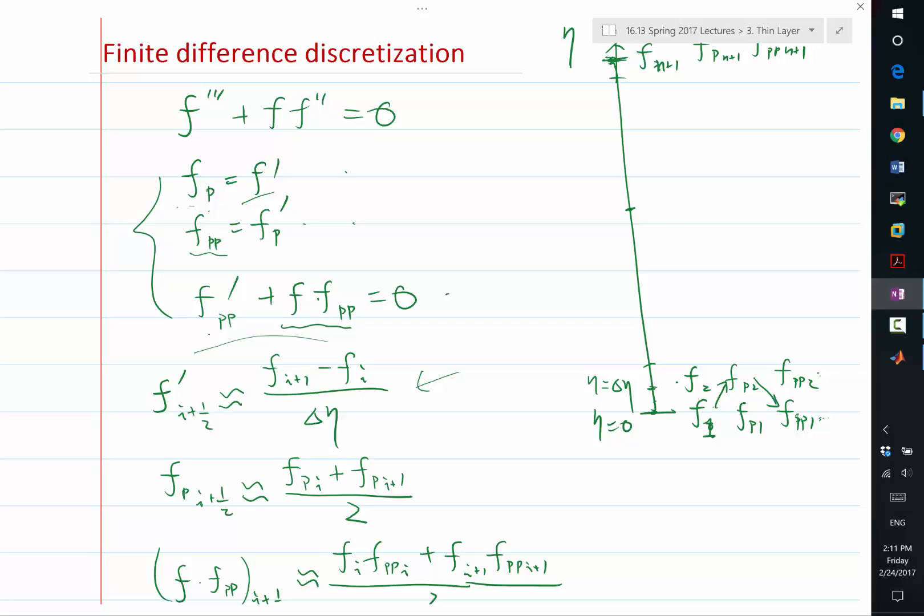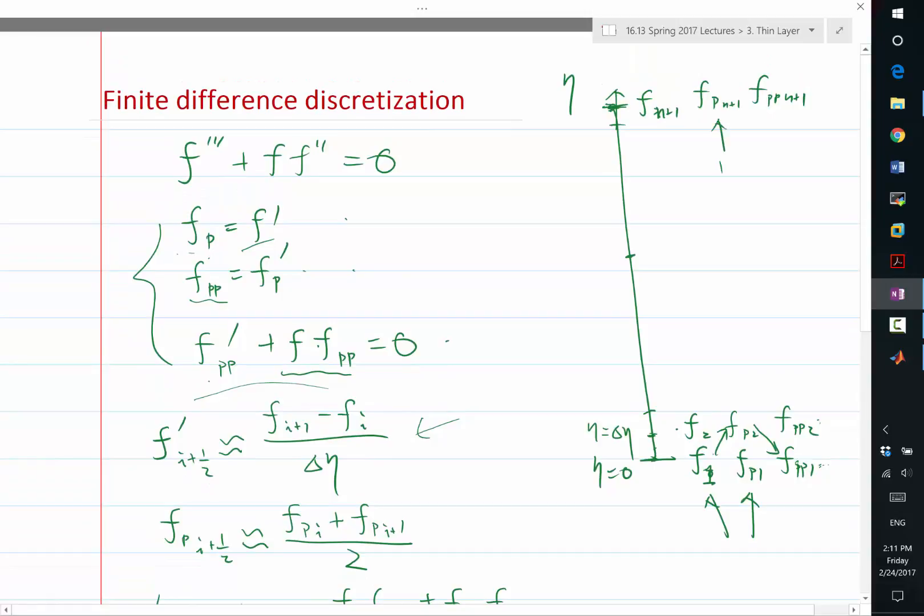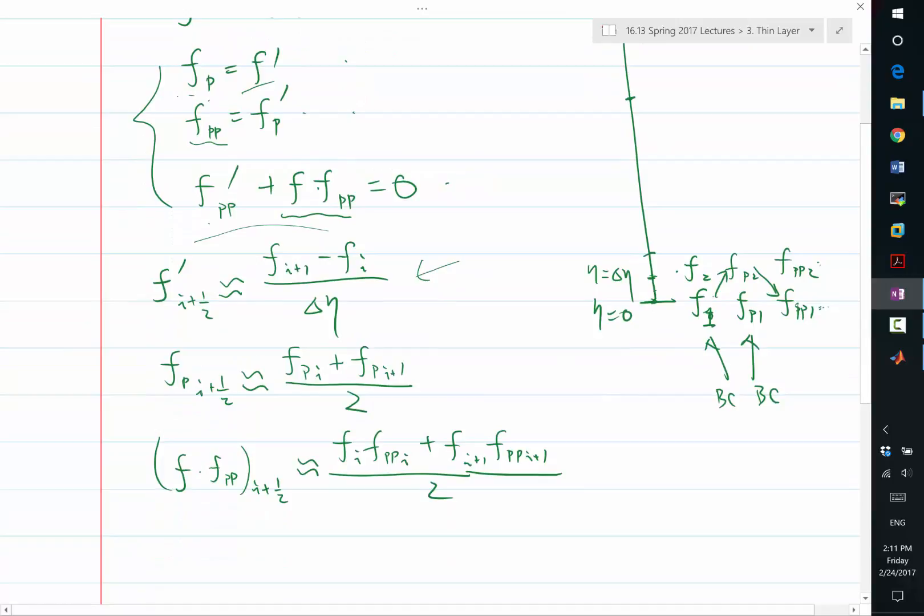So, how can we deal with that? We have exactly three boundary conditions. So, apply the boundary conditions, we have boundary conditions for this, for this, and for this. So then, we have 3n equations discretizing the differential equation, three boundary conditions. We have total of 3n plus 3 equations, solving for 3n plus 3 unknowns.